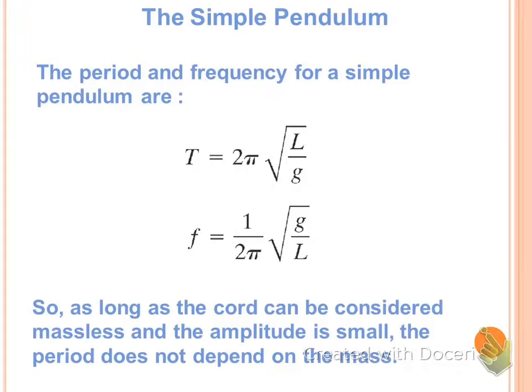We take two new equations for a pendulum specifically. Do these equations look somewhat familiar? Yes. They're basically our simple harmonic motion equations, except we substitute the length of our pendulum, and what's little g? Gravity. It's always 9.8.